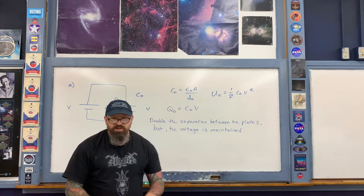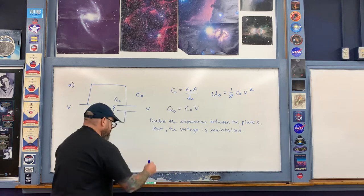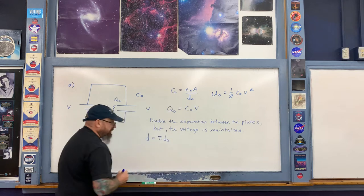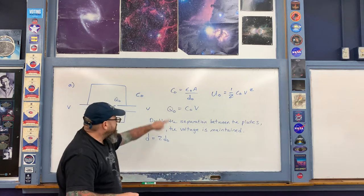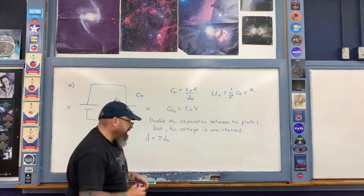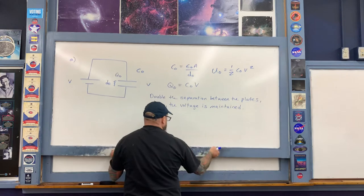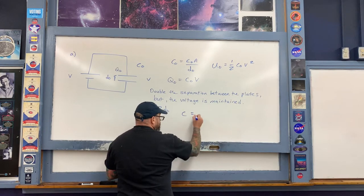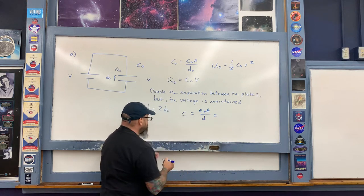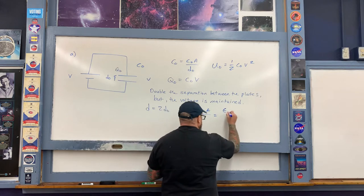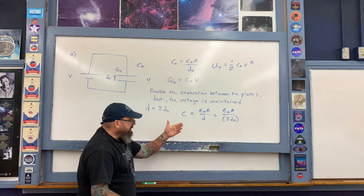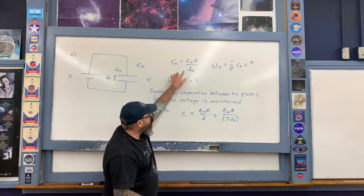The new plate separation D = 2D₀. Because capacitance depends directly on plate separation, the new capacitance C = ε₀A/D = ε₀A/(2D₀), which is one half of the original value C₀.